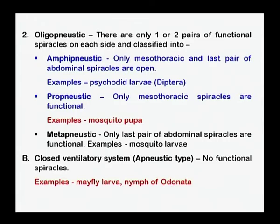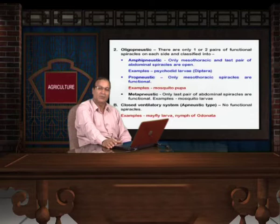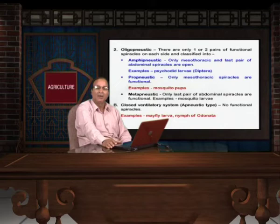In insects with no functional spiracles, the general body surface of the insect becomes respiratory, and as such they do not require any functional spiracles.